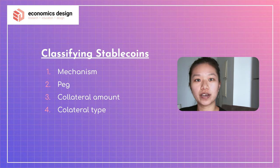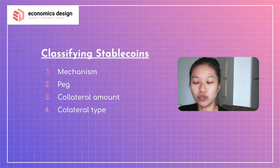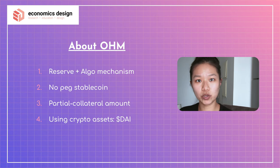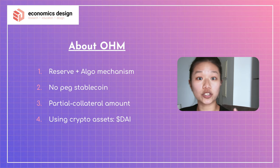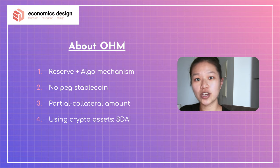We have an episode to classify stablecoins — we look at them in four different categories: what's the mechanism, what is the peg, what is the collateral amount, and what is the collateral type. Taking that into consideration, let's break OHM down. When it comes to mechanism, it uses the reserve and algorithmic mechanism. It is not pegged to anything, which is the special thing. It is partially collateralized and uses on-chain collateral, which is DAI.